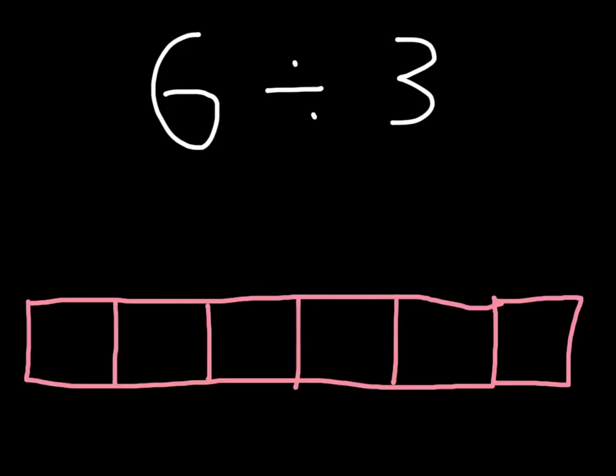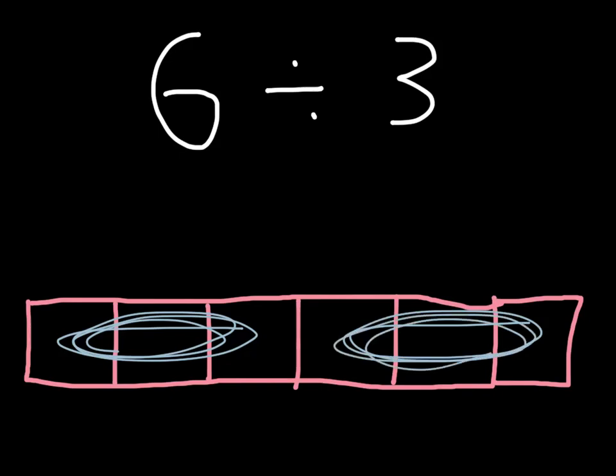And now here we have 6 blocks. And so we can think of 6 divided by 3 as dividing these 6 blocks into groups of 3. So here's one group of 3, here's another group of 3, and so of course we know that 6 divided by 3 equals 2.